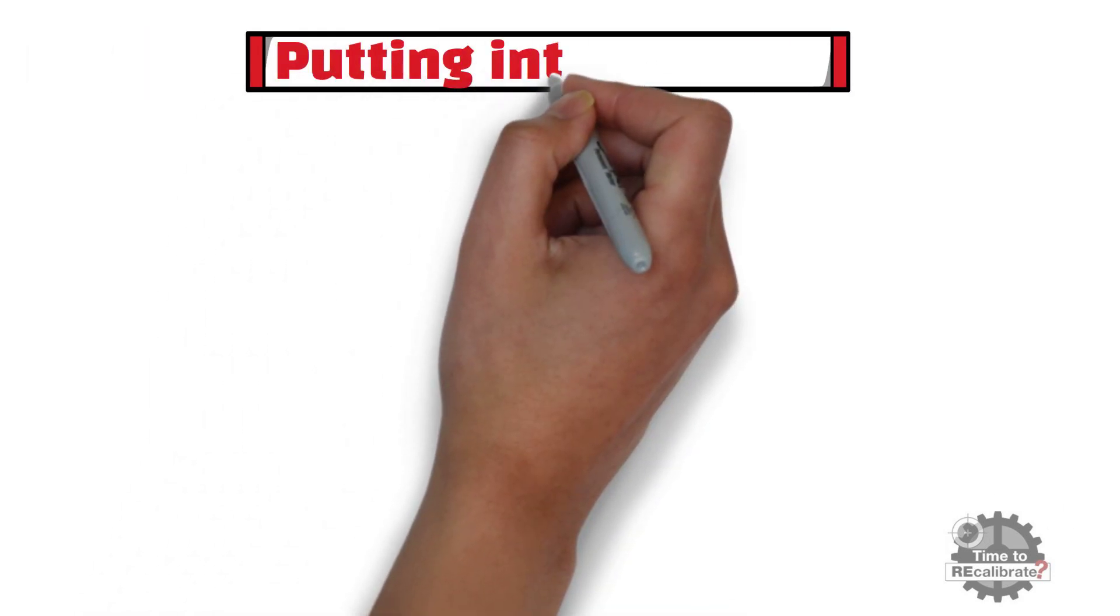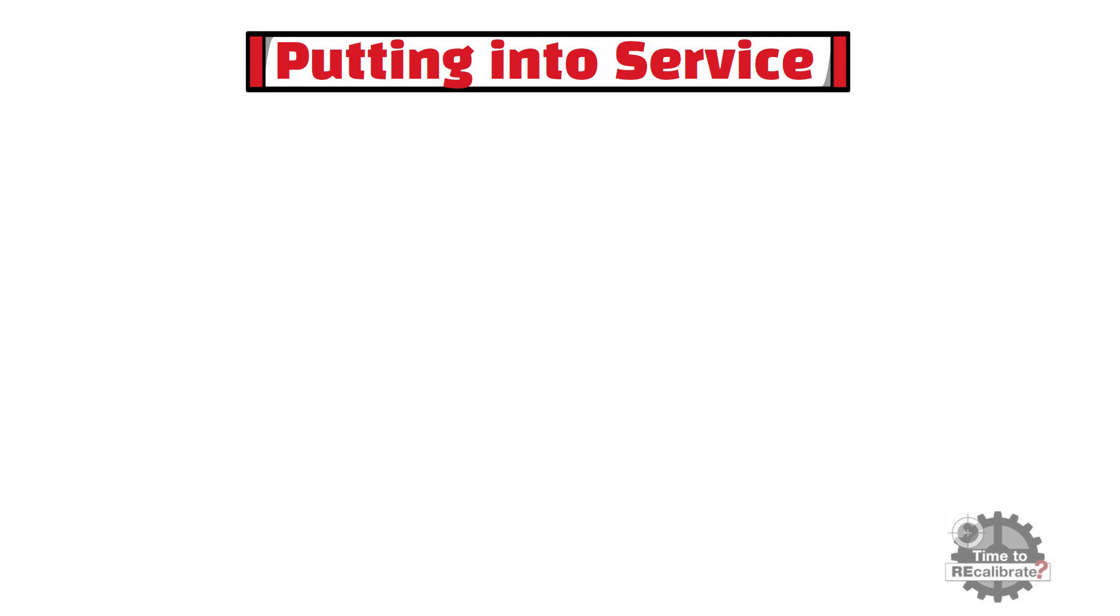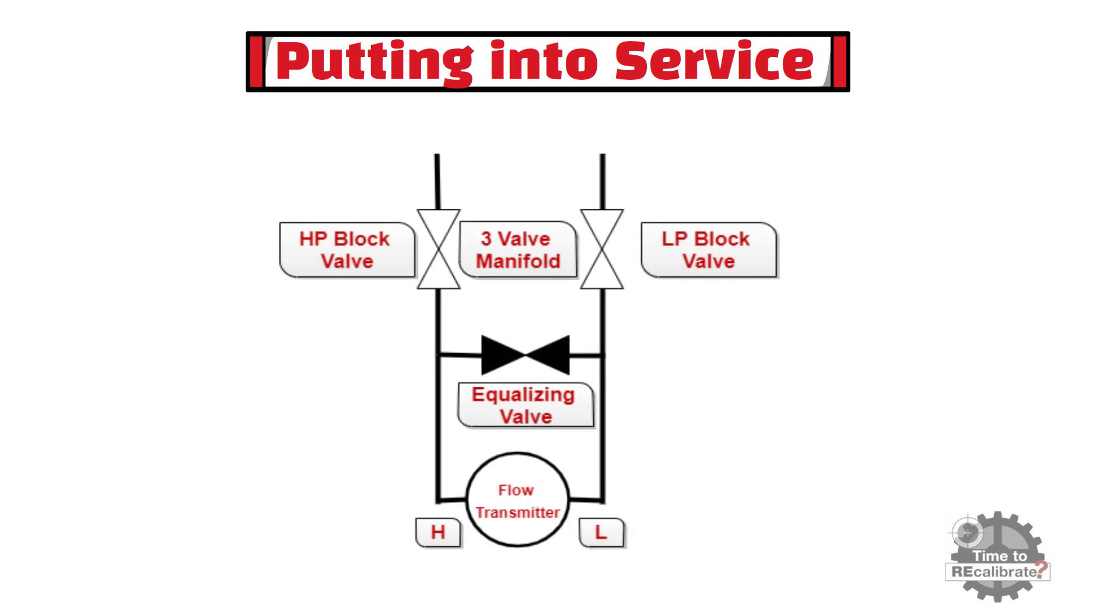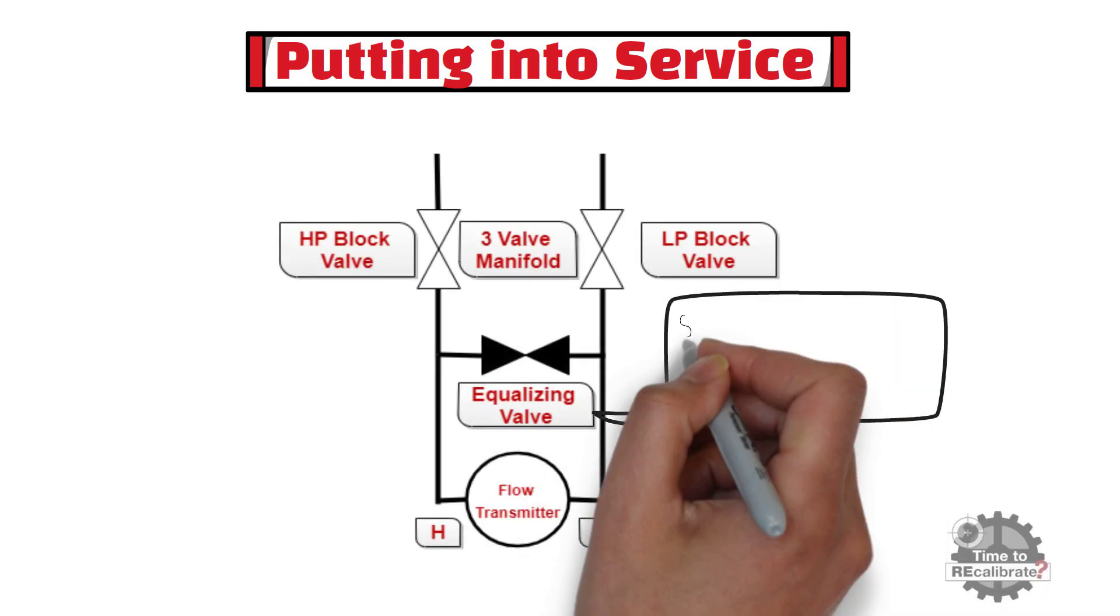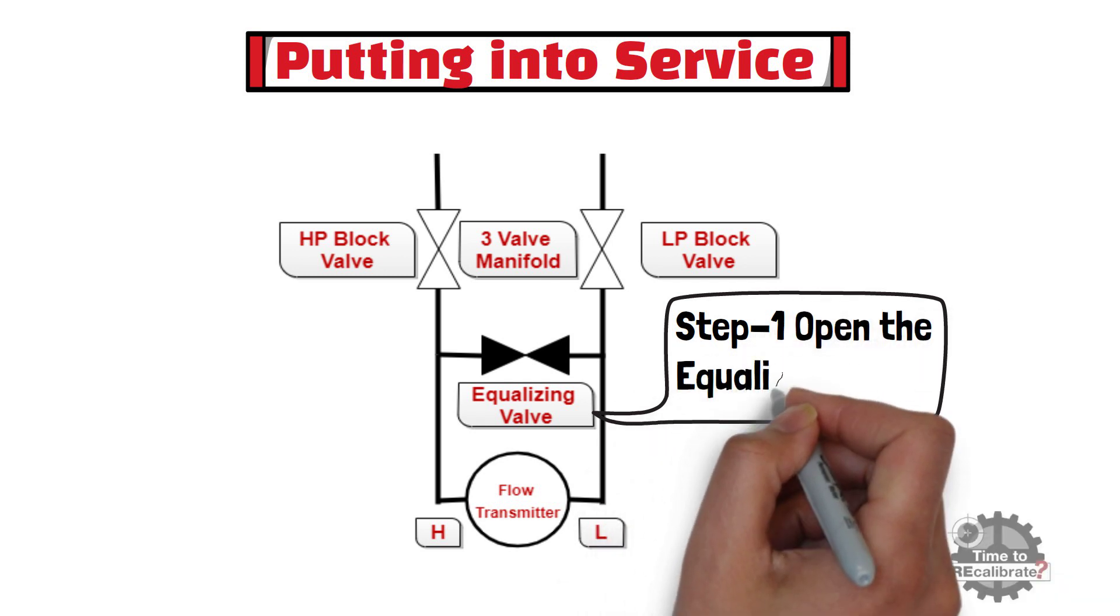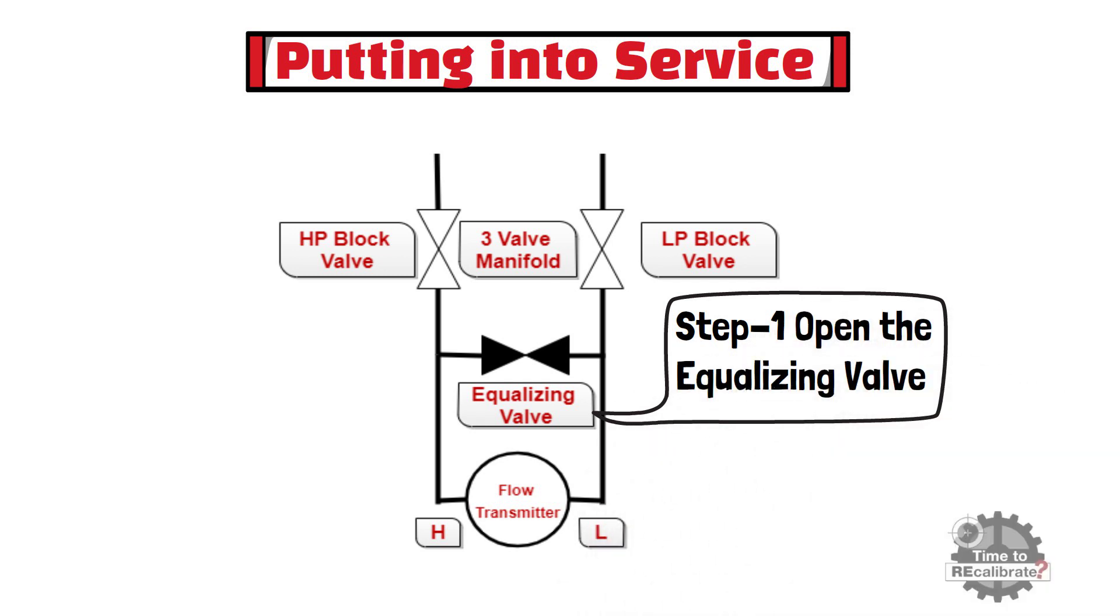Now, let's learn how to put transmitter back into service. In step 1, first of all, open the equalizing valve by rotating valve in counterclockwise direction. This will balance the pressure between the high and low side, and prevent over-ranging during this process.